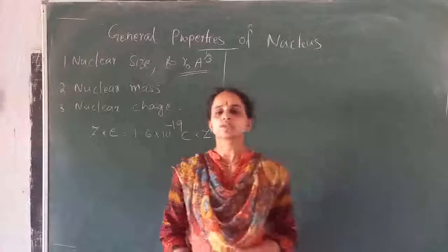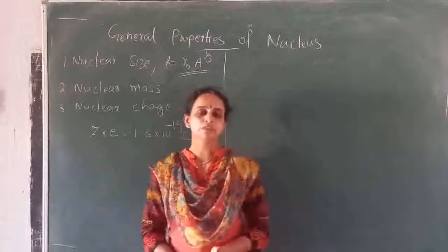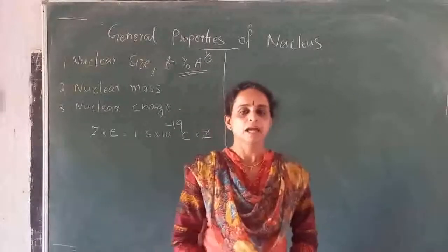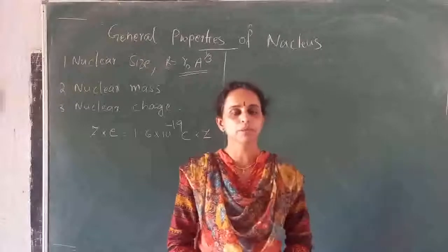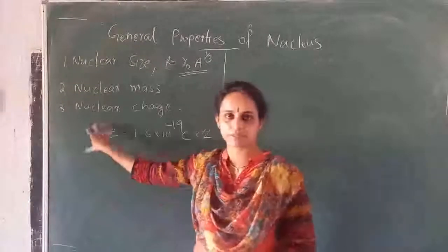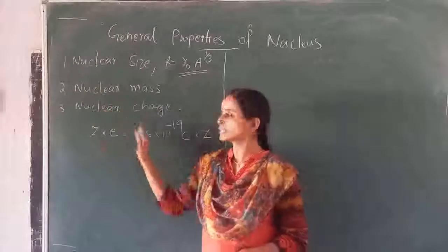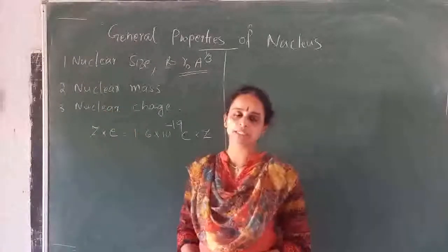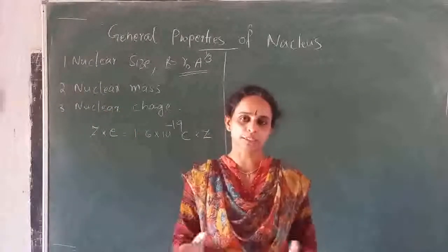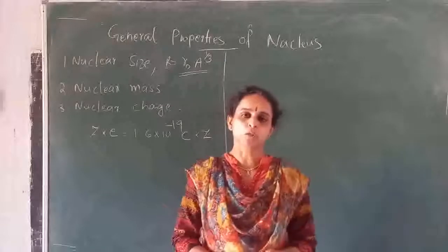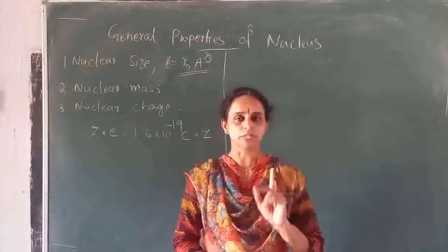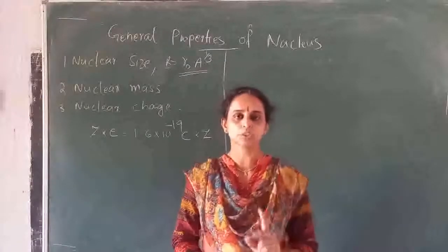The value of Z can be determined using different X-ray experiments. So the third property is the nuclear charge: it is the number of protons Z multiplied by the charge of one proton e, which gives the total charge of the nucleus.